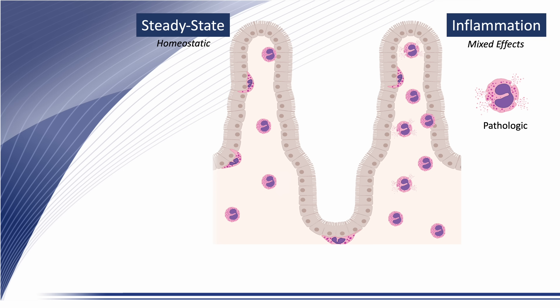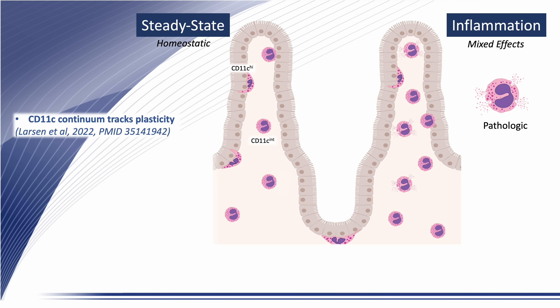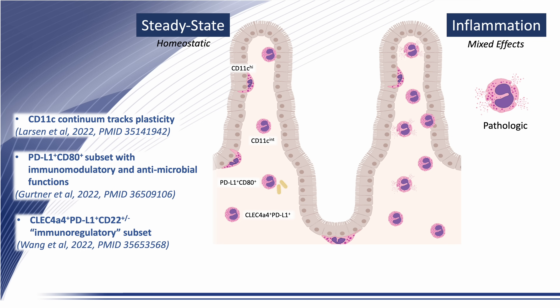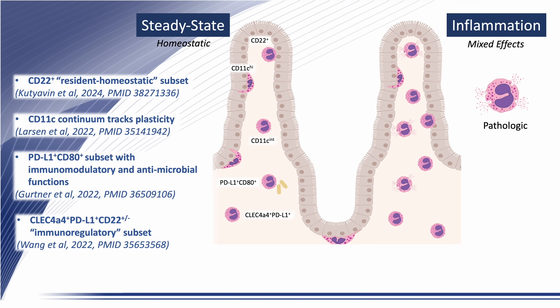In line with an emerging recognition of functional phenotypes of tissue eosinophils, recent studies have reported intestinal subsets. For example, CD11c was identified as an early marker of intestinal adaptation exhibiting an increasing continuum of expression over time and in parallel with migration into villi. A PD-L1 CD80 double-positive population exhibits antimicrobial and immune modulatory effects. CLEC4A4 identifies a subset with an immune regulatory transcriptome and enriched expression of PD-L1. And, most recently, a villus-restricted immunoregulatory subset of CD22-positive eosinophils that also expressed CLEC4A4 was reported.